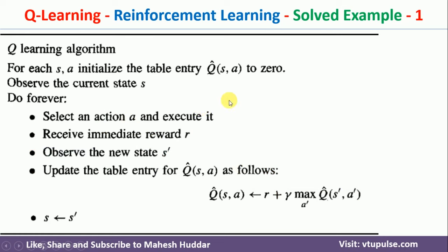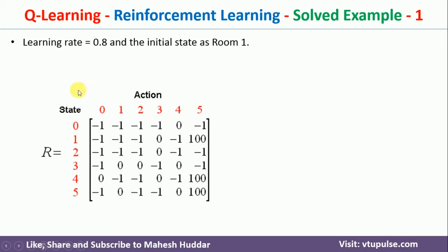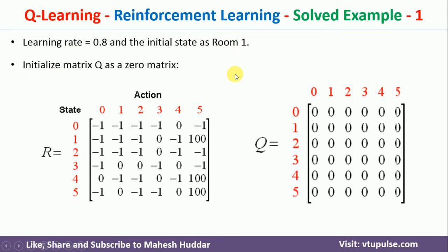This algorithm is discussed in detail in the previous video — the link is in the description below. Go through that video to understand Q-learning in detail. Coming back to the algorithm: the learning rate (gamma) is initialized to 0.8, the initial state is 1, and the Q matrix is initialized to 0 for every state-action pair.